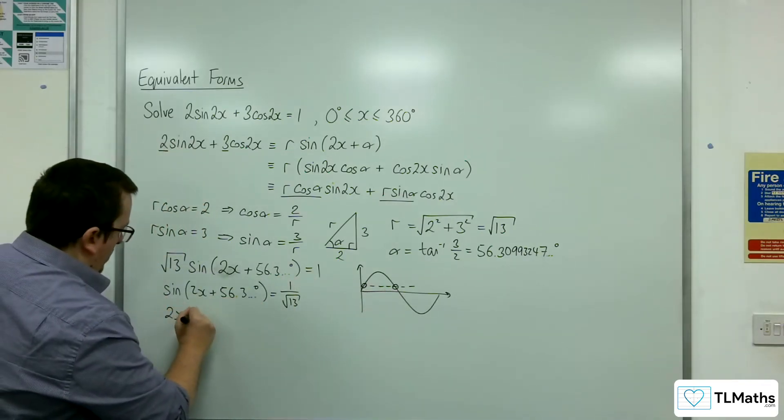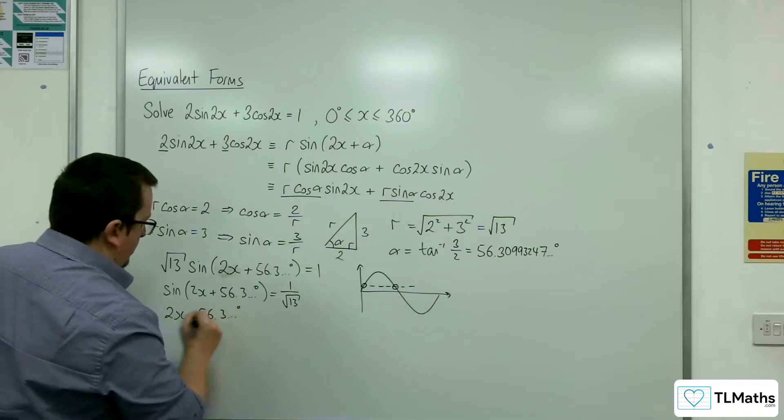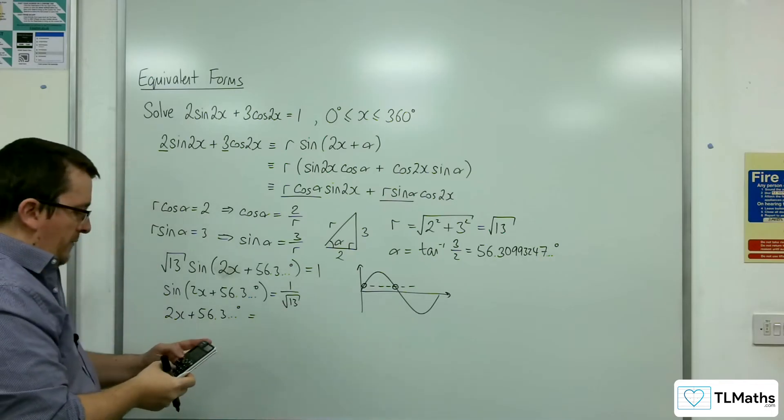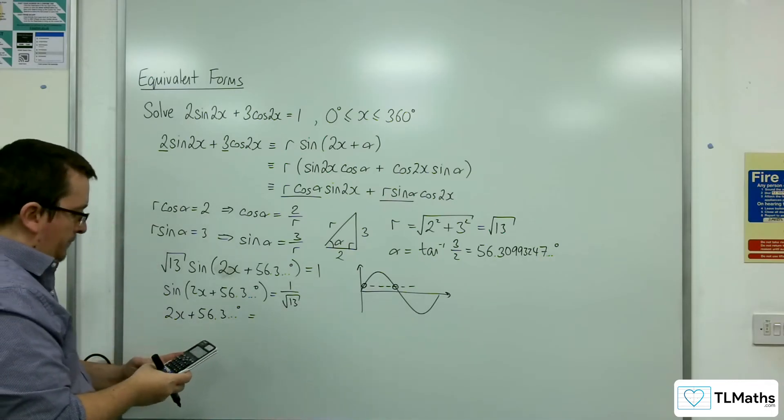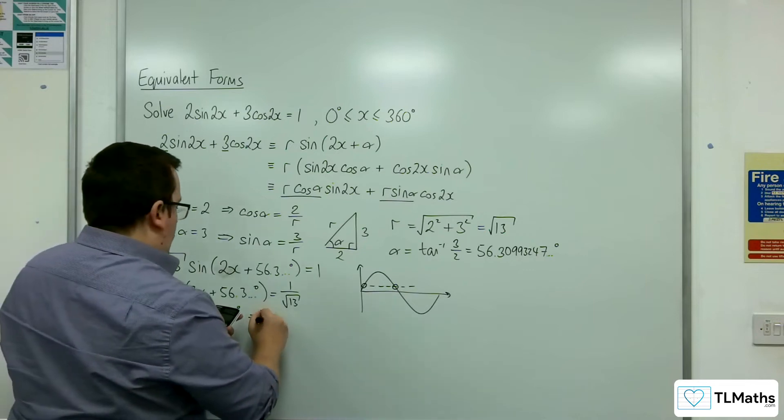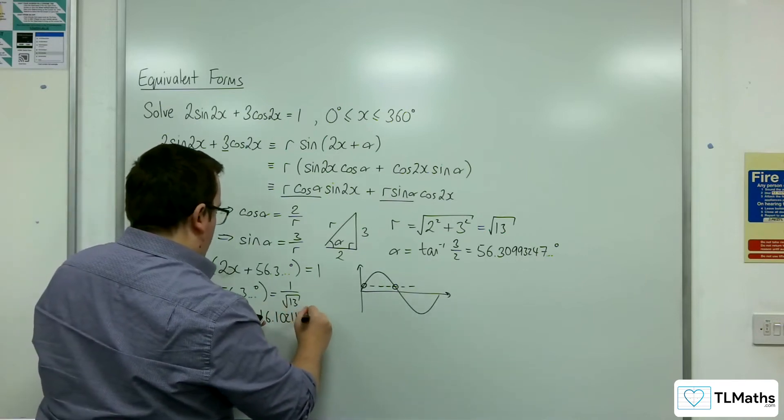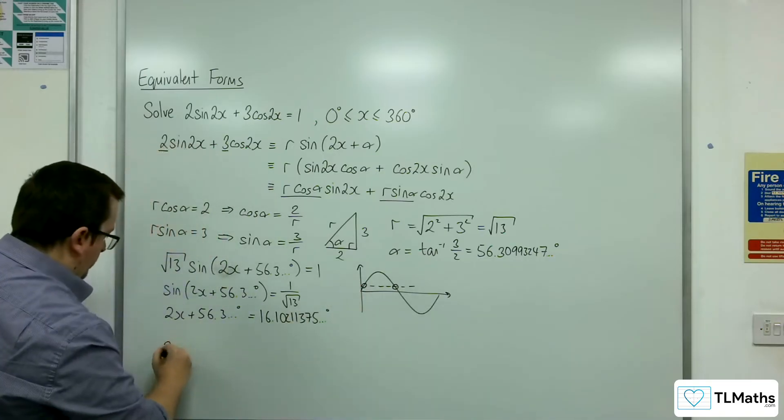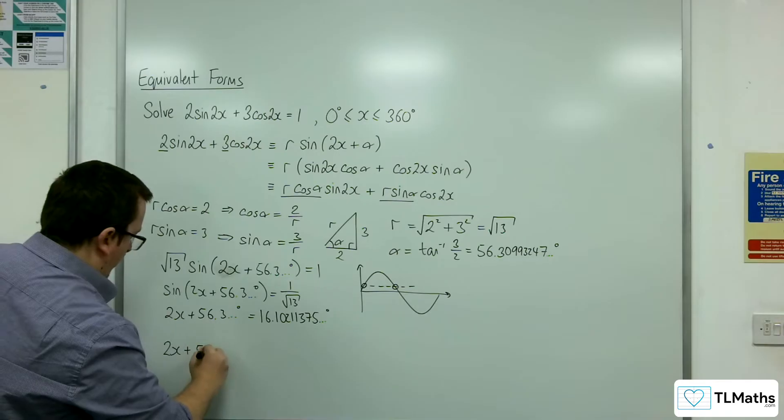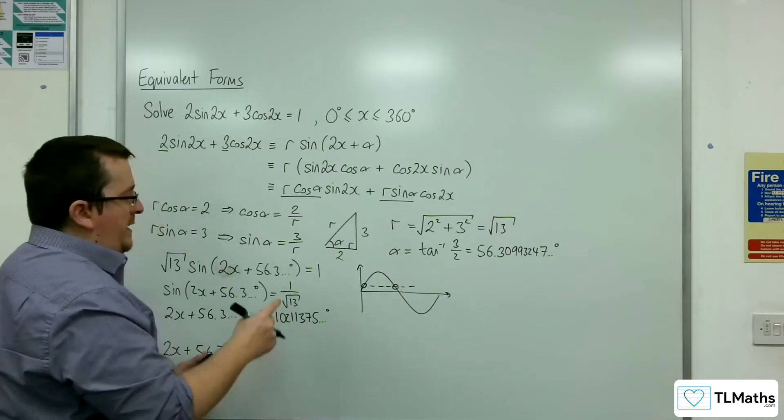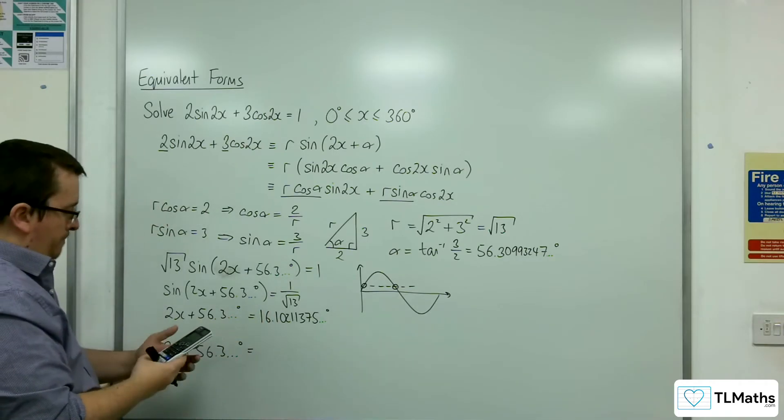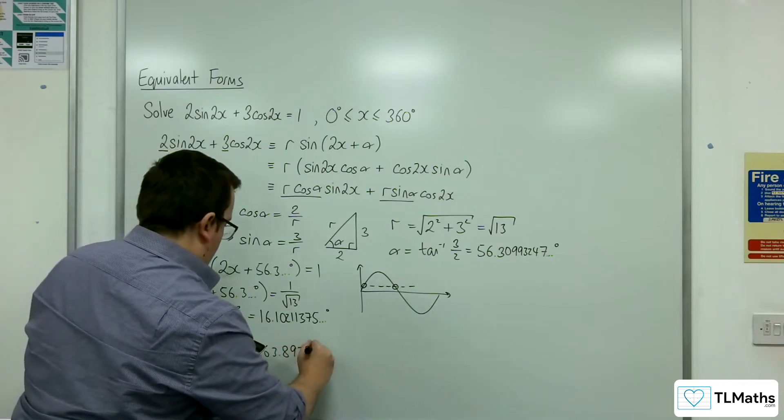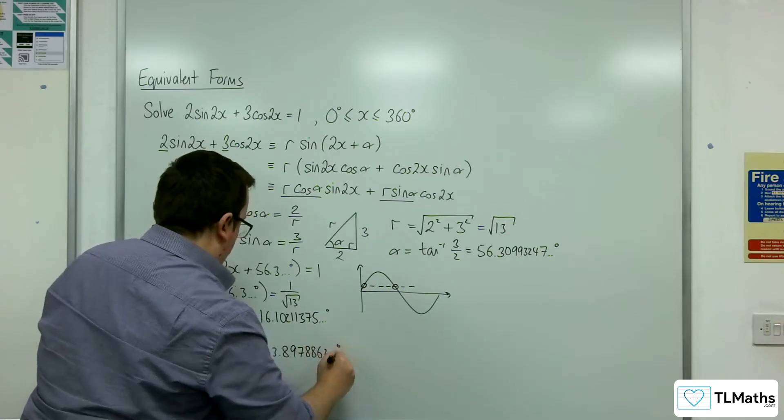So 2x plus 56.3 degrees equals inverse sine of 1 over root 13, which gets me 16.10211375, that's the first solution. And the second solution I need to subtract from 180, which is 163.8978862.